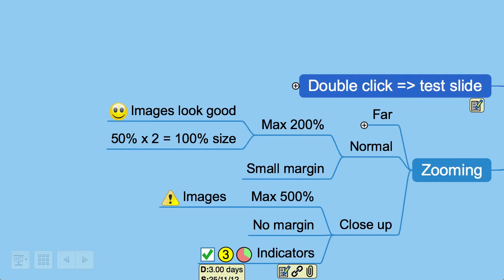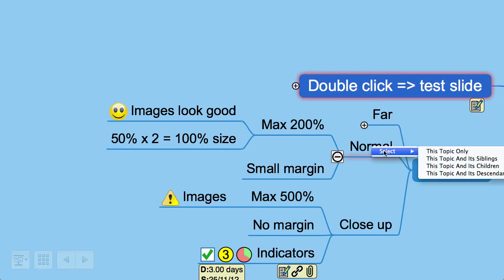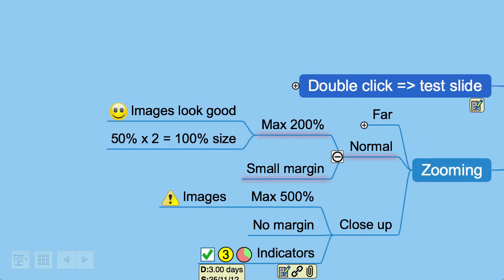You can also highlight topics during your presentation. Double click on the topic you want to select — it will be highlighted with a red border. To highlight other topics, hold down the shift key while double clicking on them. You can also use the context menu by right clicking on a topic and select whether you want to select that topic only, the topic and its immediate children, that topic and its descendants, or that topic and its siblings. To deselect the topics without going to the next slide, double click on the background.